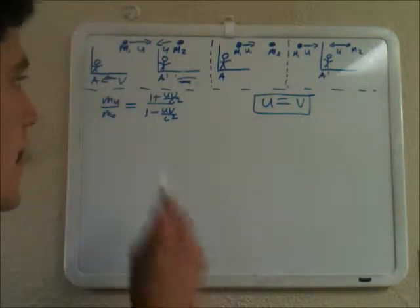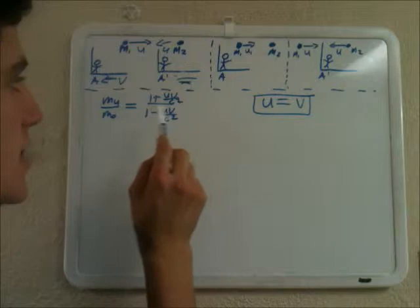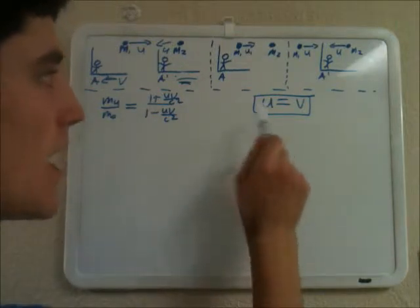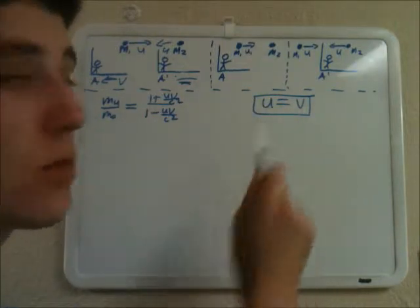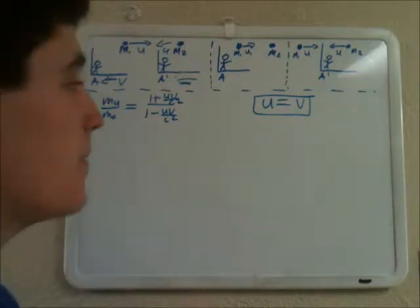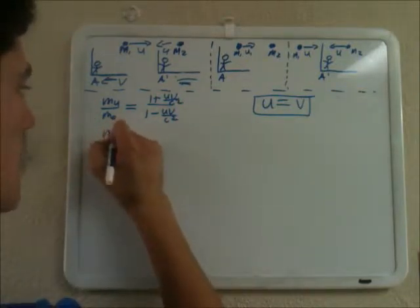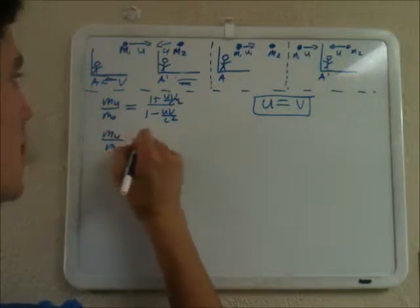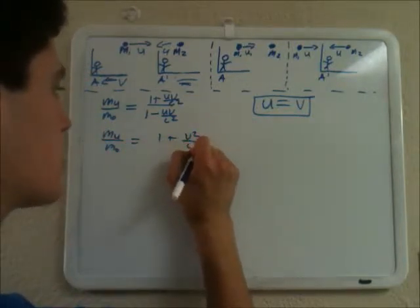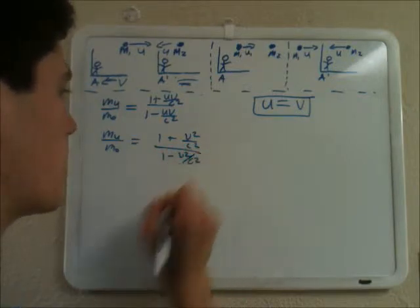Where we left off, we had mu over m0 equals 1 plus uv over c squared over 1 minus uv over c squared, and we had u equals v. So let's replace all the u's with v's, so we get mu over m0 equals 1 plus v squared over c squared over 1 minus v squared over c squared.